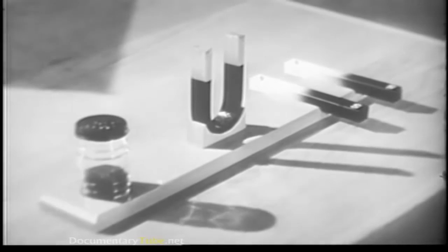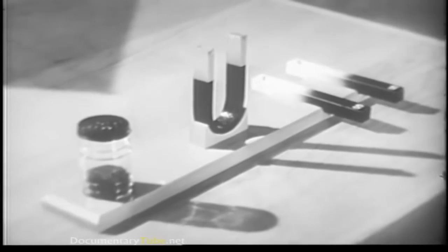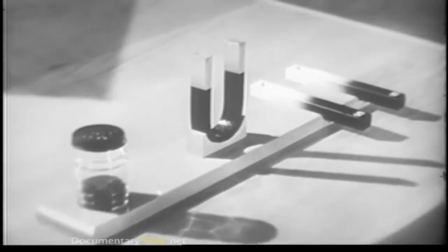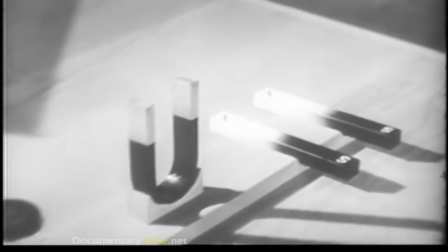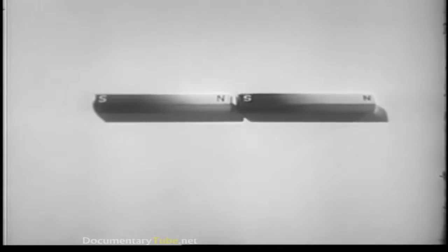The reason for this becomes clear when we examine the characteristics of magnets a little more closely. Every magnet has a north pole and a south pole. Unlike poles of magnets attract each other, whereas like poles repel each other. That is to say, if the north pole of one magnet is placed near the south pole of another, the attraction is so strong that they move closer together until they touch.